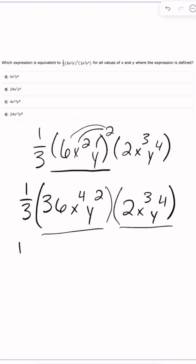So I'm going to bring down my one-third. First I'm going to do 36 times 2, which is 72. Then I'm going to do x to the fourth times x to the third. So again, laws of exponents. Whenever we multiply two variables that have exponents, we actually add the exponents. So 4 plus 3 is 7, so I'm going to put x to the seventh.